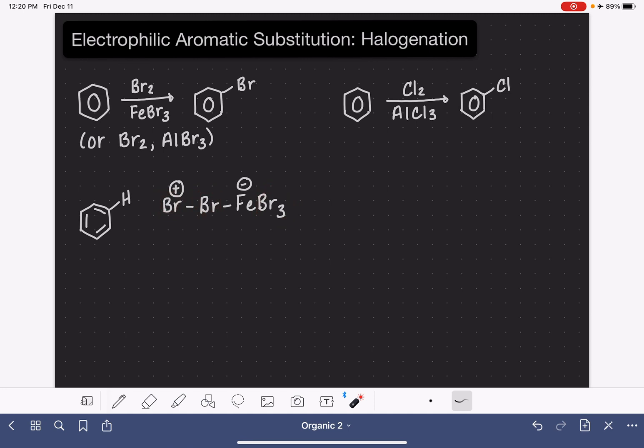And in the first step of the reaction, the double bond of the benzene ring goes after the positively charged bromine, and it breaks that bromine-bromine bond, and it leaves us with this intermediate.